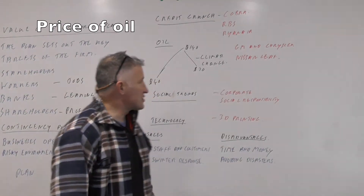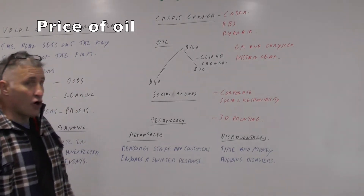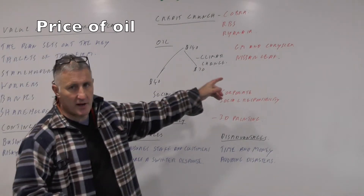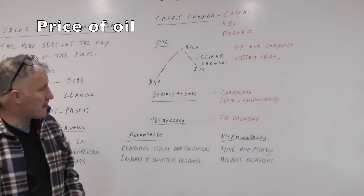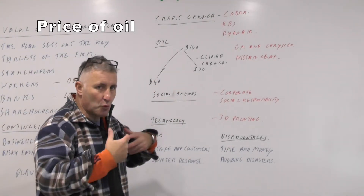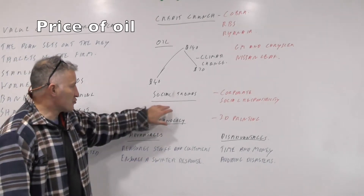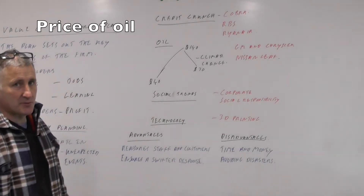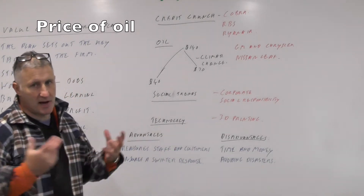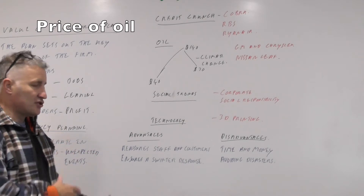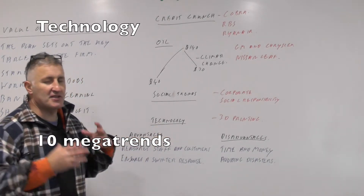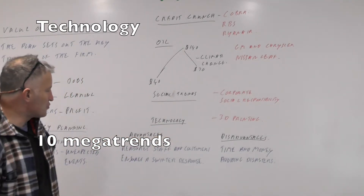Whereas the Nissan Leaf, one of the first electric cars on the market, was developed with the idea that if the price of oil continued to rise they would be able to dominate that market. It's been a partial success, but it was probably a risk worth taking. On social trends, obviously corporate social responsibility is something Unilever are taking up in a big way. And on technology — 3D printing is a massive example; all the changes that are going to take place in manufacturing are pretty massive and will have a big impact on firms all over the world.